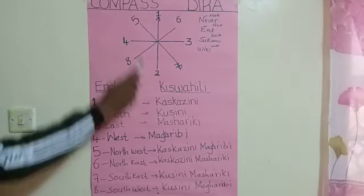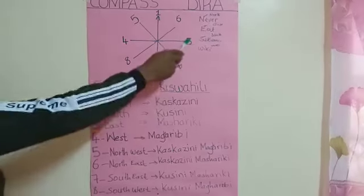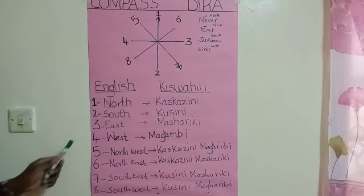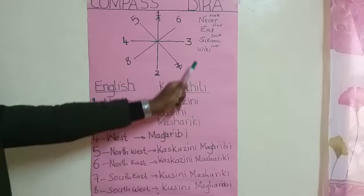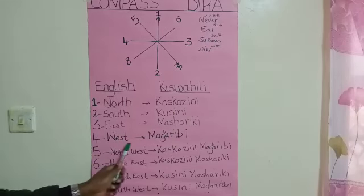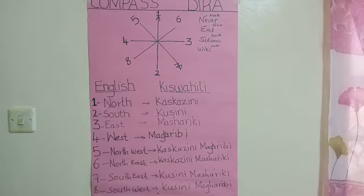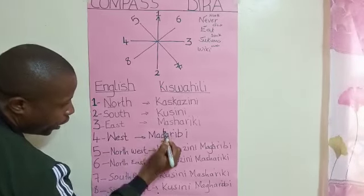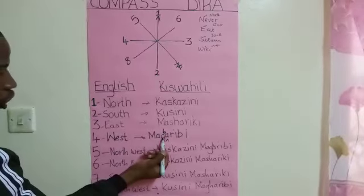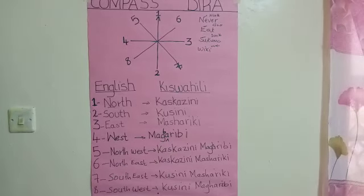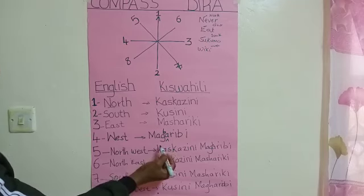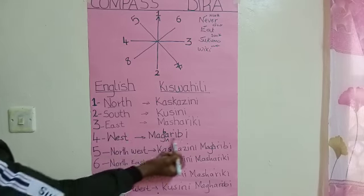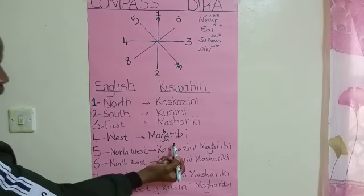When we move on, we go to number four — the cardinal point where we have the West. Number four: west in Kiswahili is 'magaribi.' I believe you can see the letter H that I wrote up here — it is supposed to be in between G and A. I did this intentionally to give you work: you write magaribi by applying the H. So therefore, west is magaribi — west, magaribi.